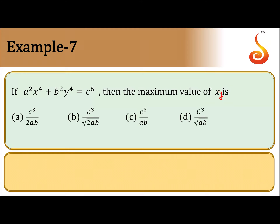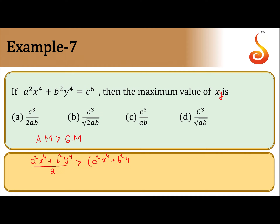For some value of x and y, this can be easily solved not by calculus but by the concept that Arithmetic Mean is greater than Geometric Mean. Applying this concept, we get: (a²x⁴ + b²y⁴) / 2 is always greater than (a²x⁴ · b²y⁴)^(1/2). Since a²x⁴ + b²y⁴ = c⁶, this product gives us a·b·x²·y².